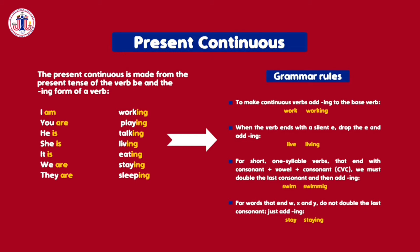In this case you have to eliminate the 'e' and add -ing. For short one-syllable verbs that end with consonant-vowel-consonant, we must double the last consonant and then add -ing. For example, the verb 'swim' — here you have to double the last consonant and add -ing.